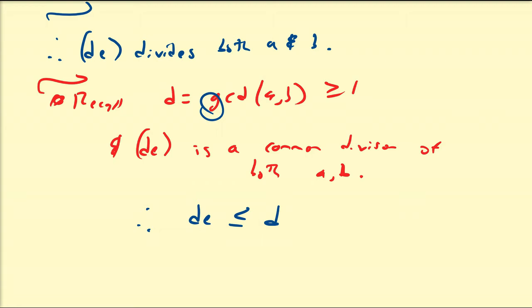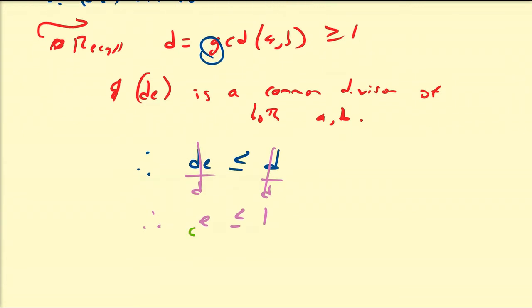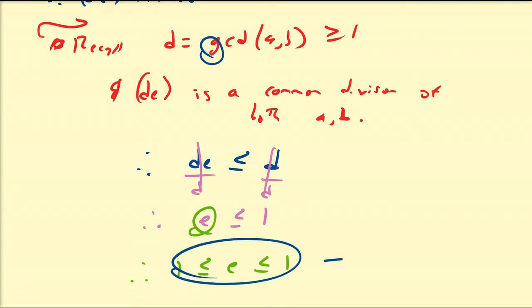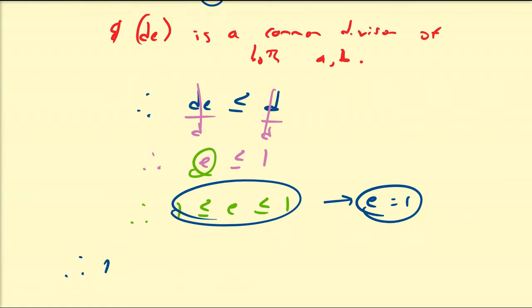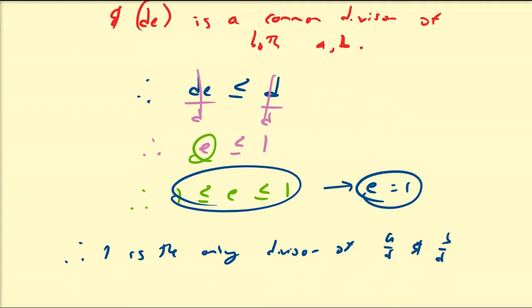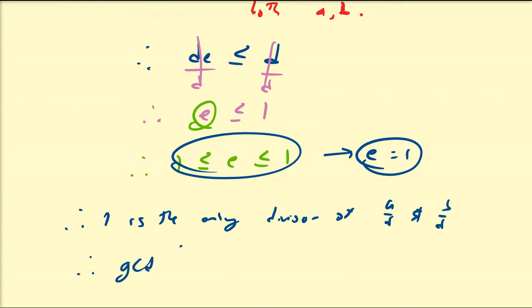Dividing both sides by D — and remember D must be greater than or equal to 1, so it's not zero — we get E is less than or equal to 1. By properties of divisors, E must also be greater than or equal to 1. So we have 1 ≤ E ≤ 1, meaning the only possible integer value is E = 1. Therefore 1 is the only divisor of A over D and B over D, which means the greatest common divisor of A/D and B/D equals 1.